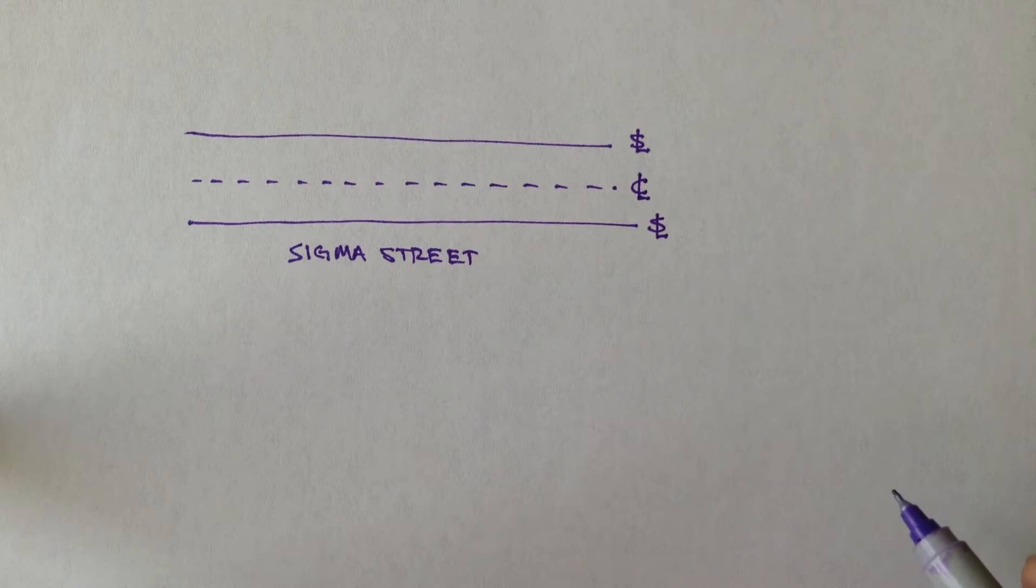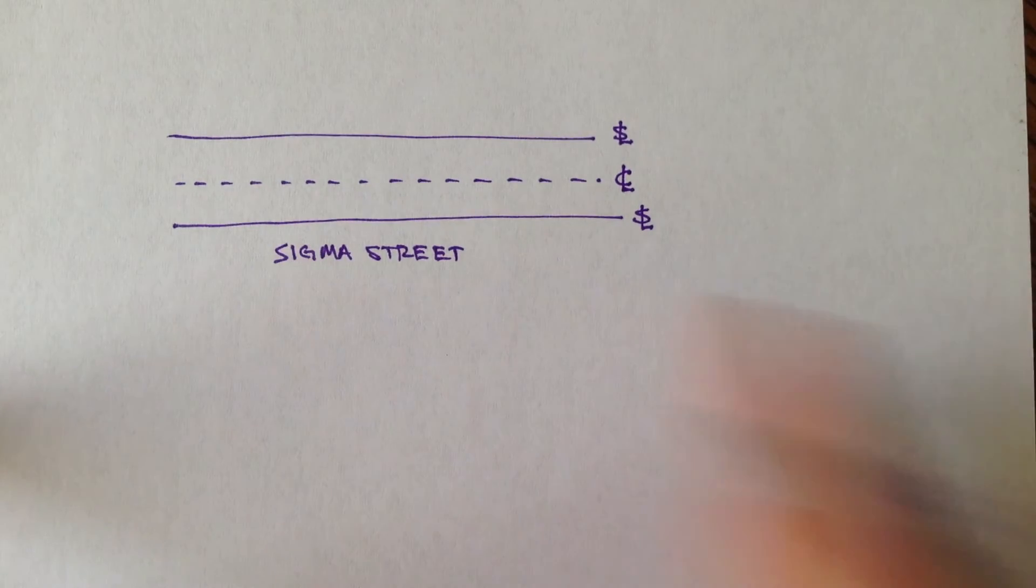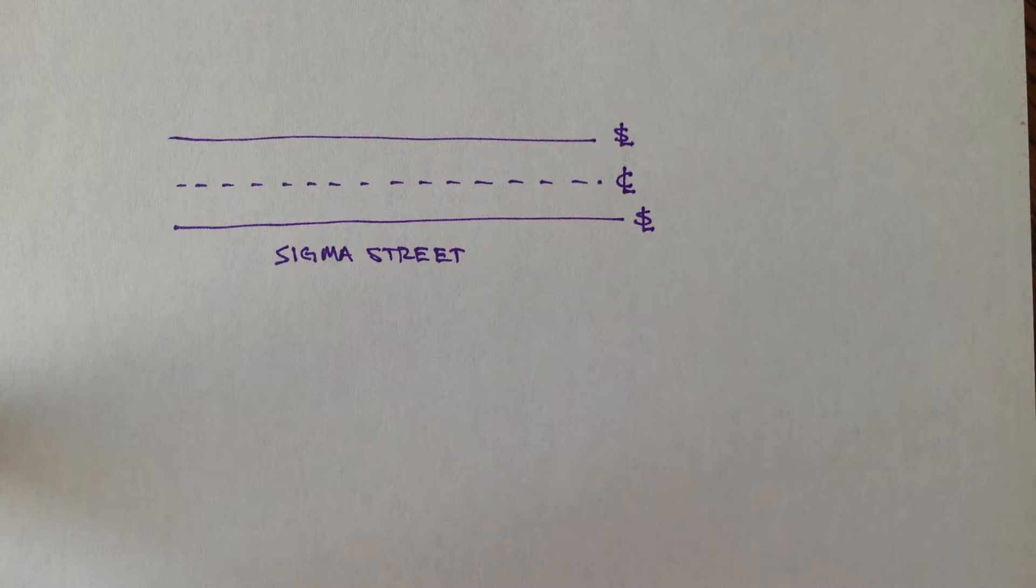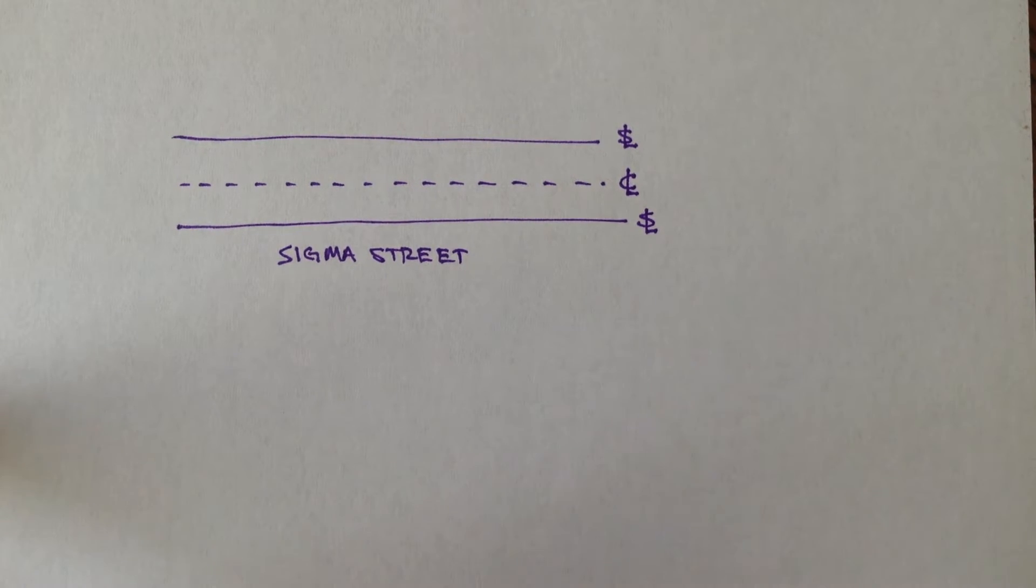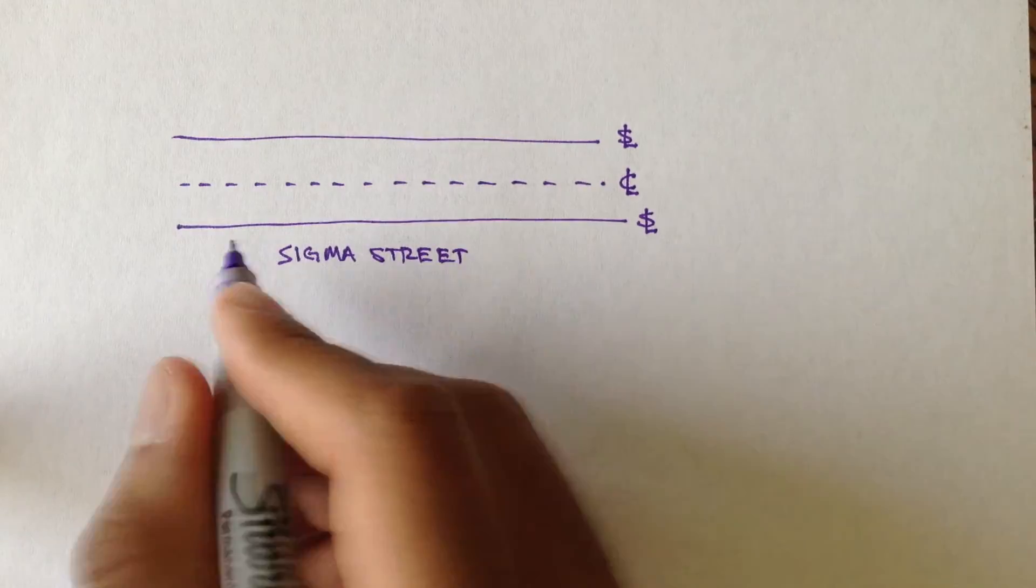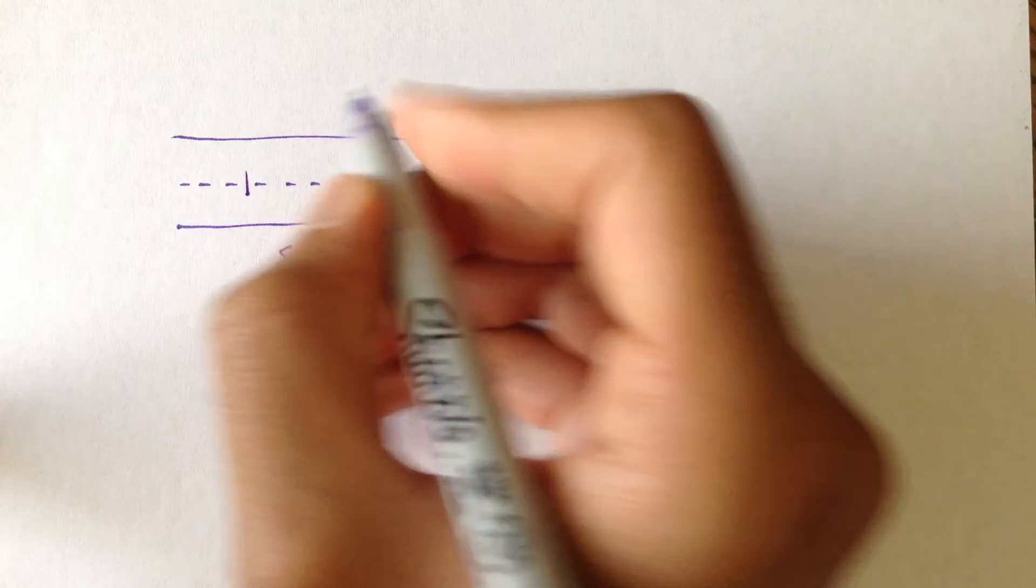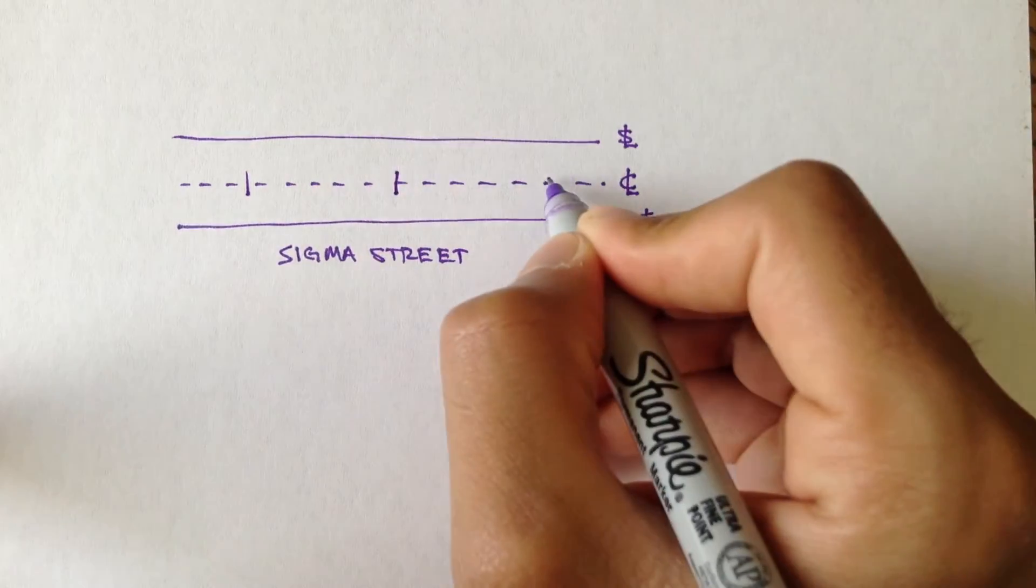Now, stationing is just a way to measure out certain intervals. In our case, we usually measure out stations in 100s of feet. And the way we write stations are with a plus sign. So let's say on this street, we had three stations. One, two, three.